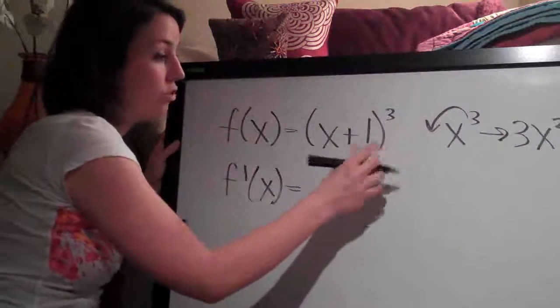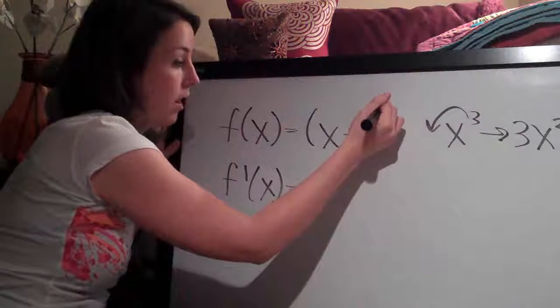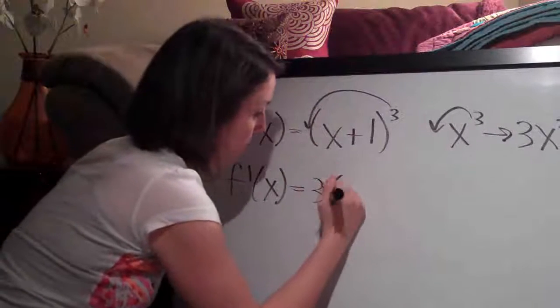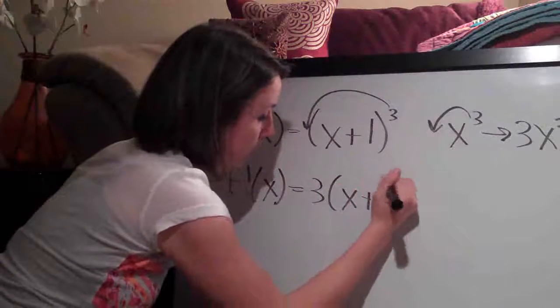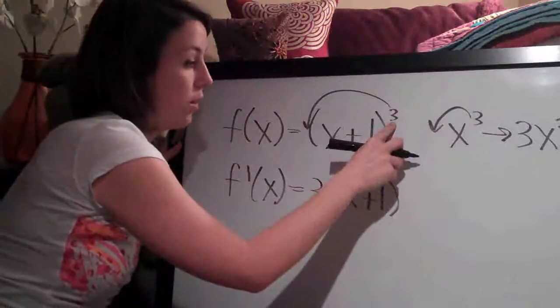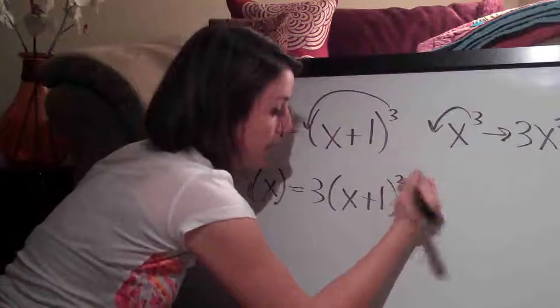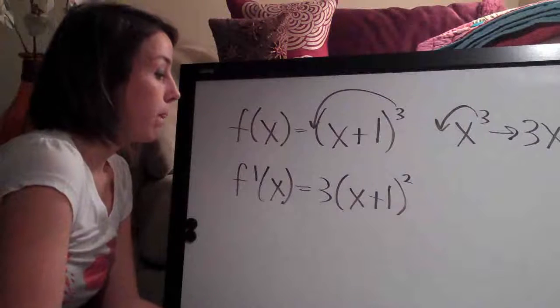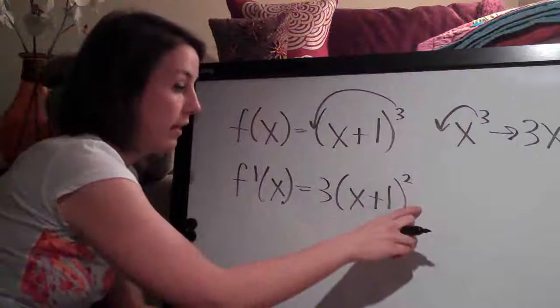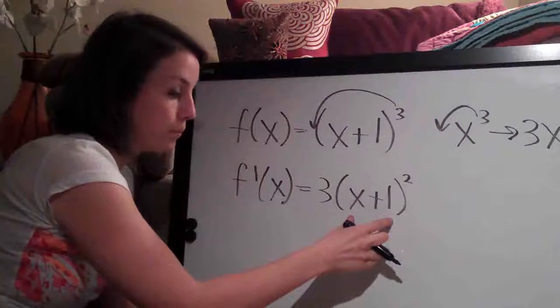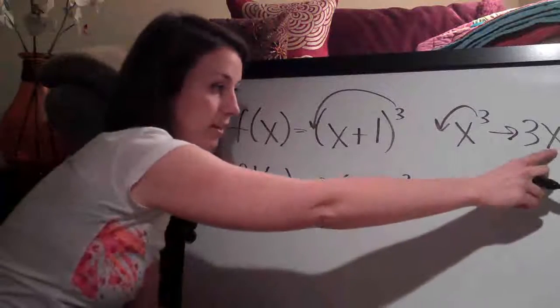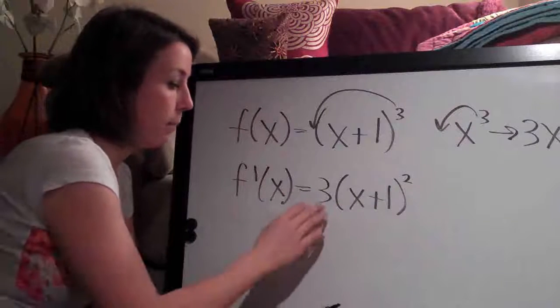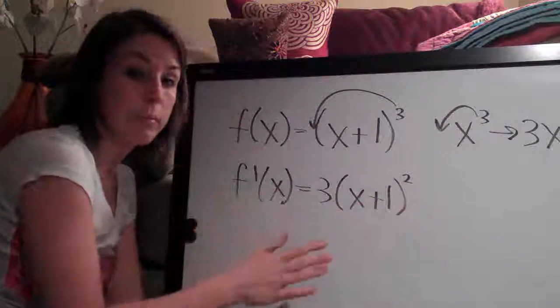Similarly, with chain rule, we can bring the exponent in front here to be the coefficient. So we're going to say 3 times x plus 1 and then we subtract 1 from the exponent and we have 2 there. So we can do this except that x plus 1, there's two terms in here instead of just an x. So we can't just bring the 3 out in front, make this a 2 and be done.